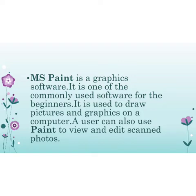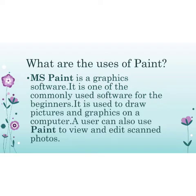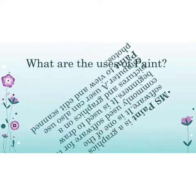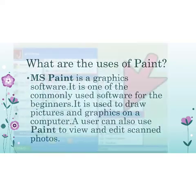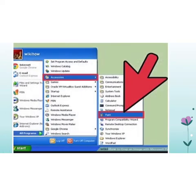Now I have a question: how to open MS Paint from Windows? For this purpose, first of all click on the Start button.